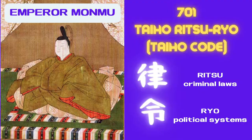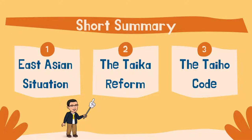Short Summary: First, the Yamato government aimed to establish a centralized state amidst the turbulent situation in East Asia. Second, Prince Nakanoe seized the political power and began a political reform centered on the emperor. Third, the emperors who followed him completed the reform, and a centralized state was finally established in Japan.